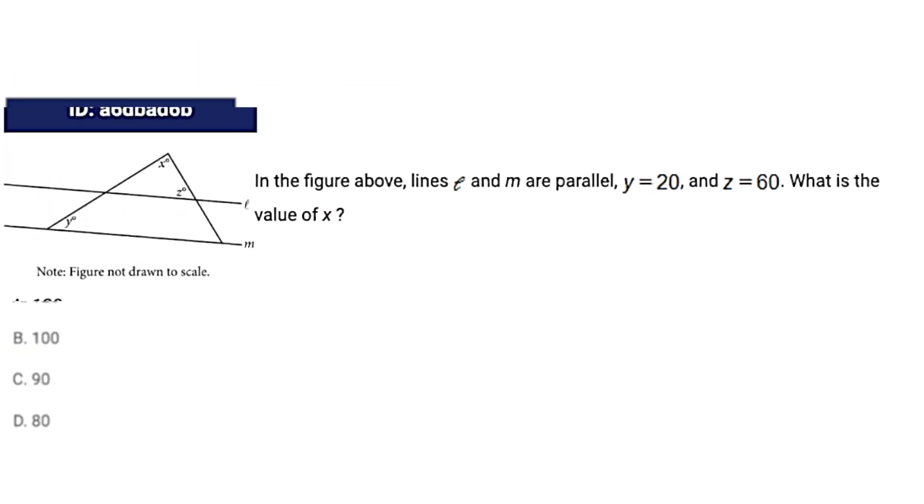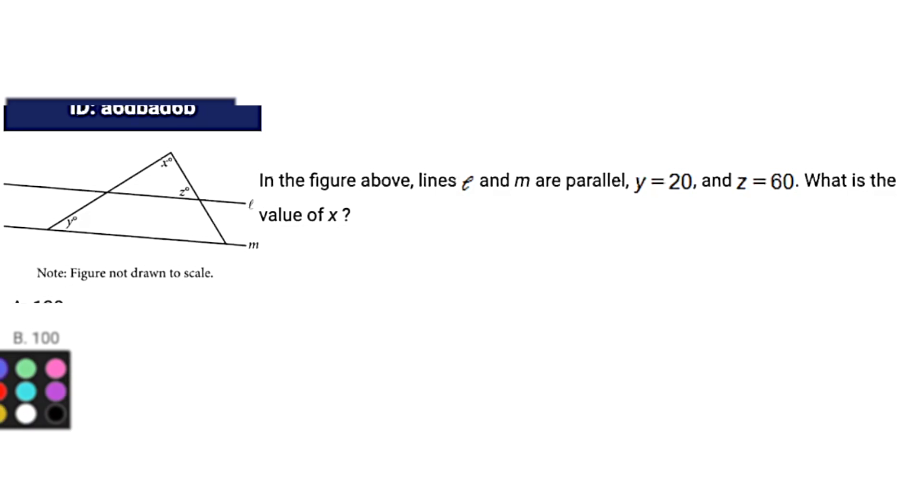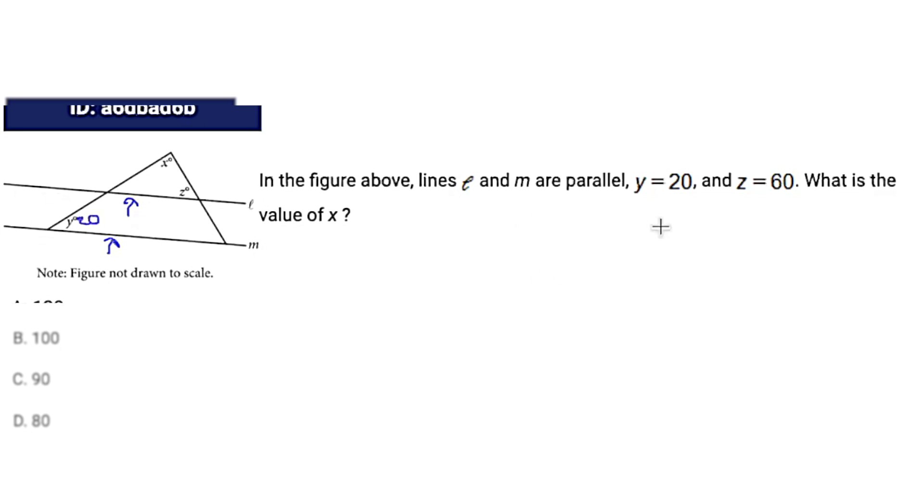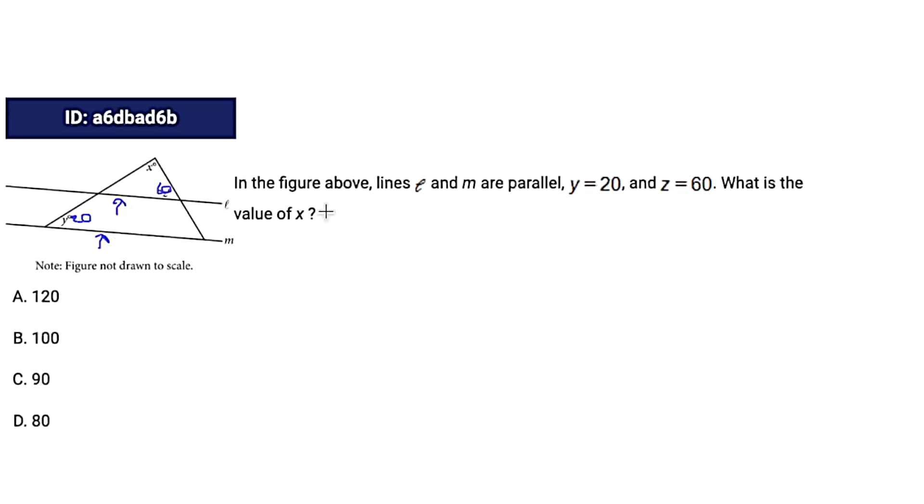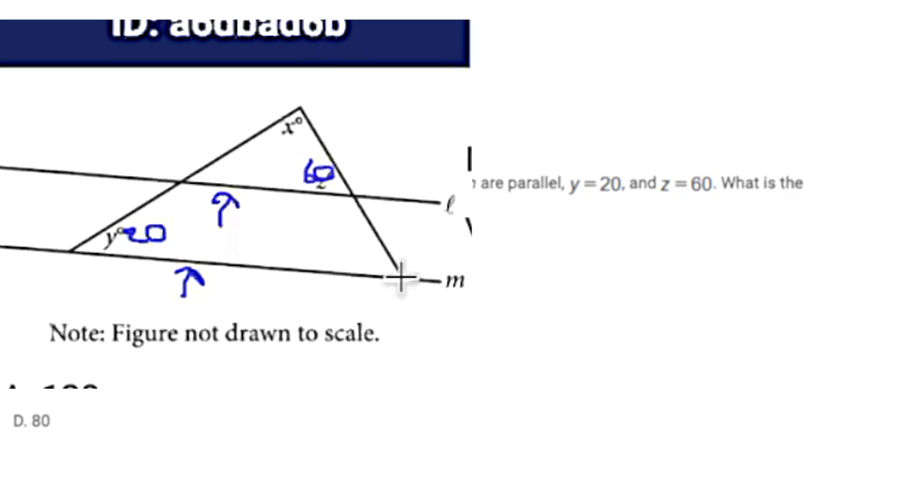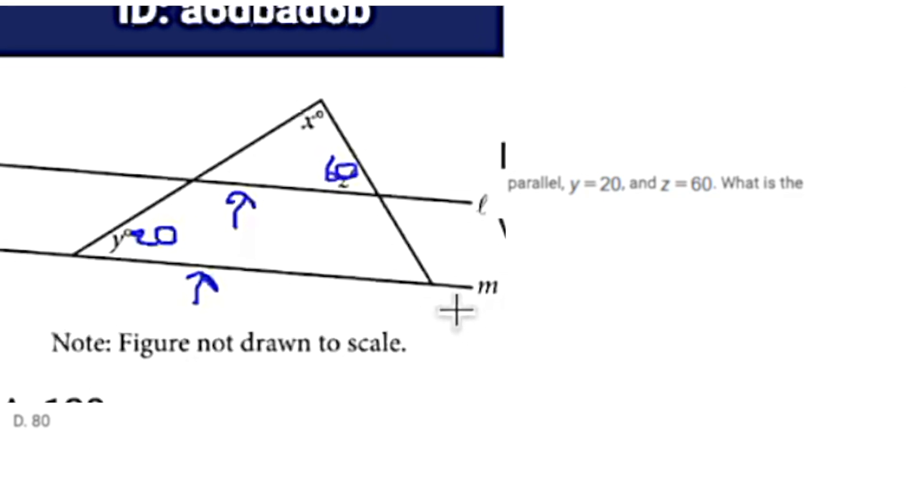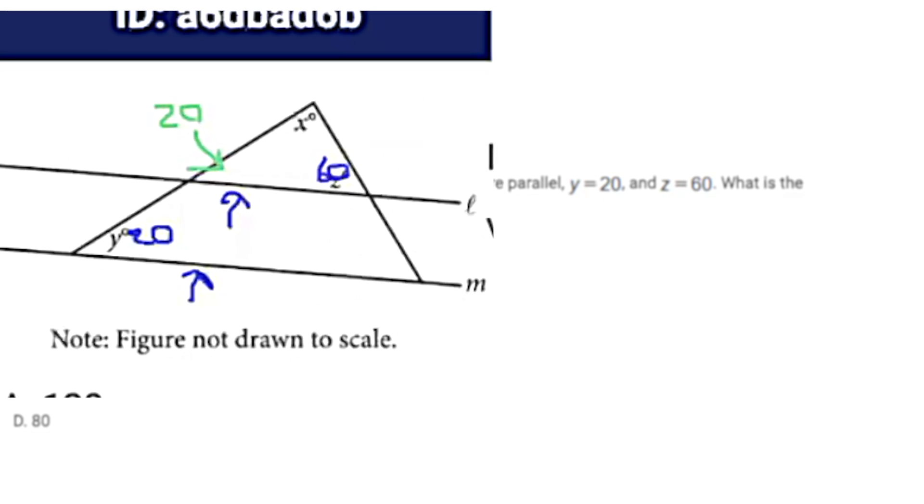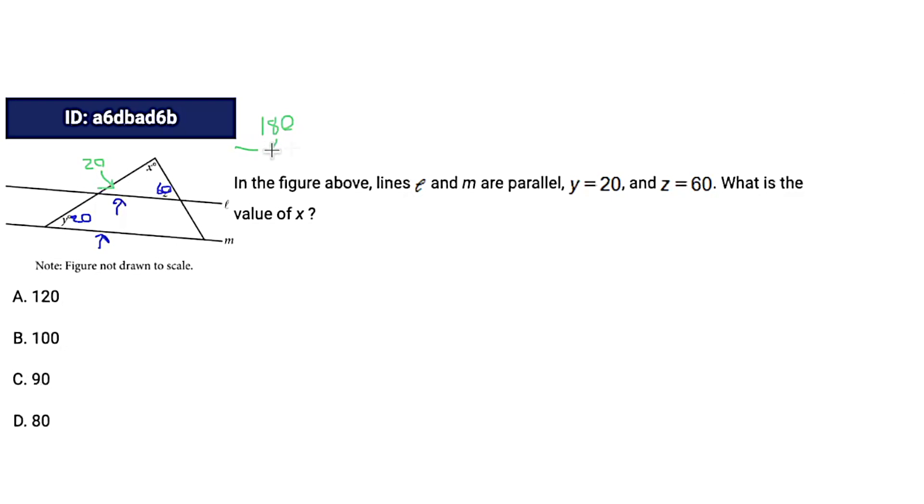Here's another easy one dealing with lines and angles. It's telling us that these two lines are parallel. Y is 20 degrees and Z is 60 degrees. You're always going to want to label anything they give you. Because these lines are parallel, they're essentially forming the same exact angles with this triangle. So if Y is 20, this angle over here is also going to be 20. We'll start with 180, we're subtracting 60 and 20, which is 80, which means X is going to be 100.